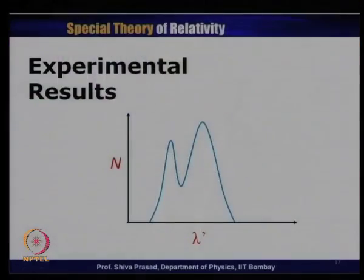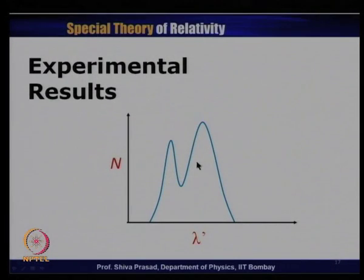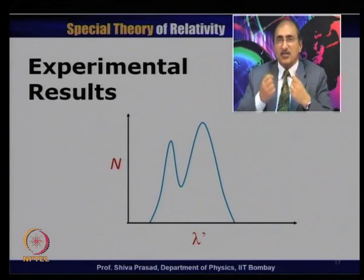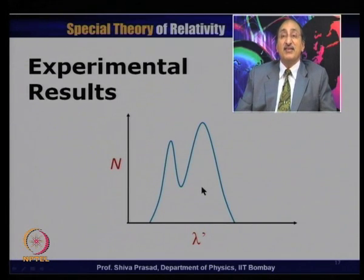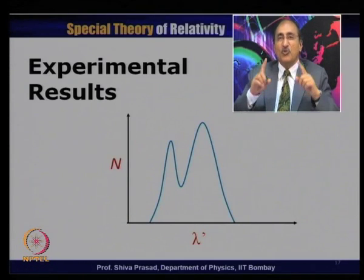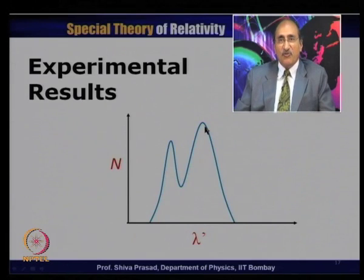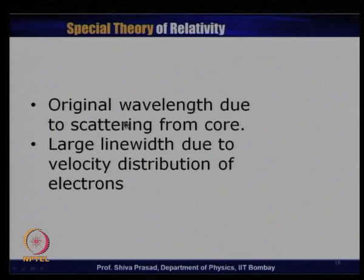The larger line width is expected because electrons are not really at rest — they move with different velocities, causing a distribution in the measured photon energies. The basic result is that the Compton effect experiment proves λ′ − λ = (h/m₀c)(1 − cosθ), and the shifted peak satisfies this equation. Therefore, we can treat the photon as a particle with energy h·ν and momentum h·ν/c. The original wavelength peak is due to scattering from core electrons, and the large line width is due to the velocity distribution of electrons.